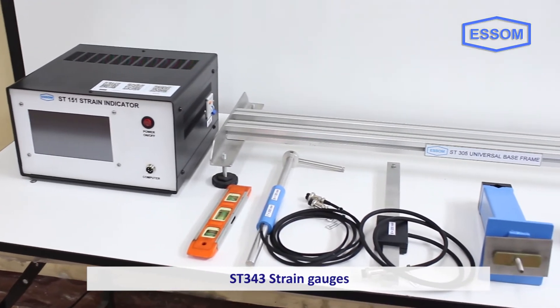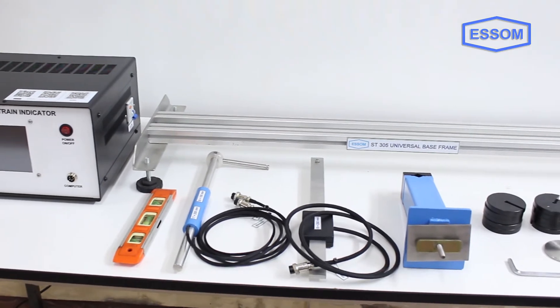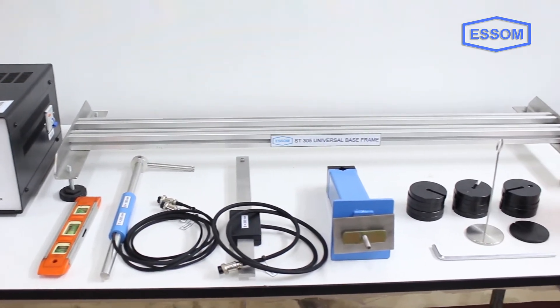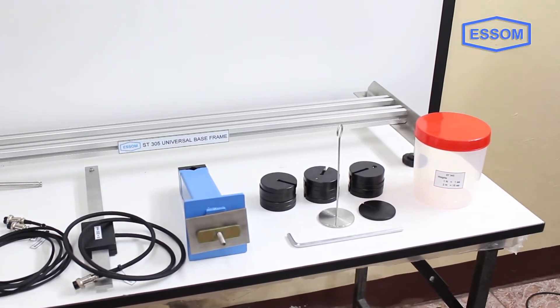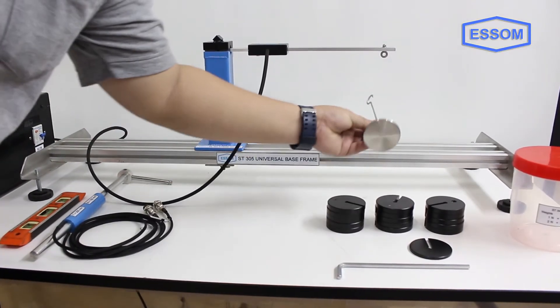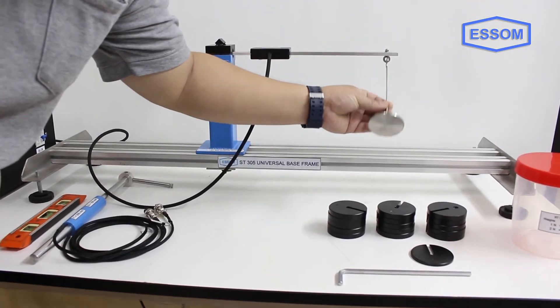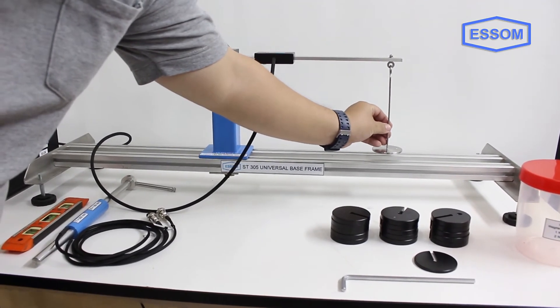ST 343 strain gauges. The apparatus demonstrates the use of electrical resistance strain gauge in measuring strain of material under bending, torsion, or combined bending and torsion stresses. It is to be used with ST 305 universal base frame, separately supplied.